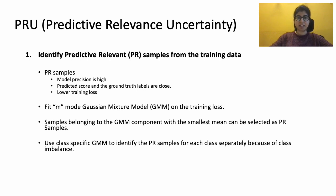We therefore propose PRU to quantify uncertainty in recommendation systems. In PRU, uncertainty for a sample is defined as its distance from the predicted relevant samples of the training data. We first identify PR samples from the training data. PR samples are samples where the model prediction is high, the predicted score and ground truth labels are close, and they have lower training loss. We fit an M-mode GMM on the training loss.